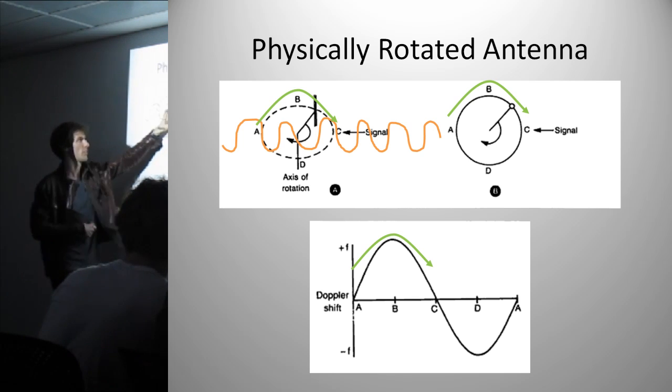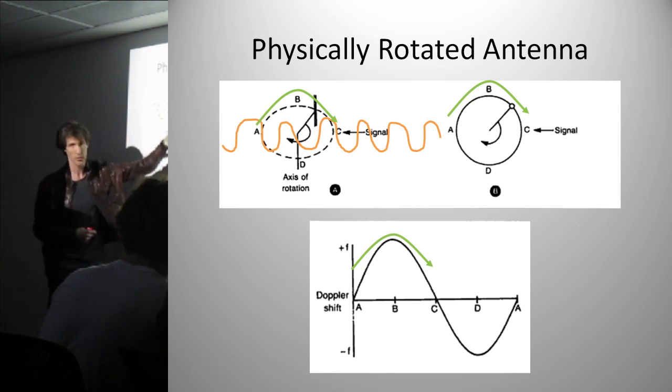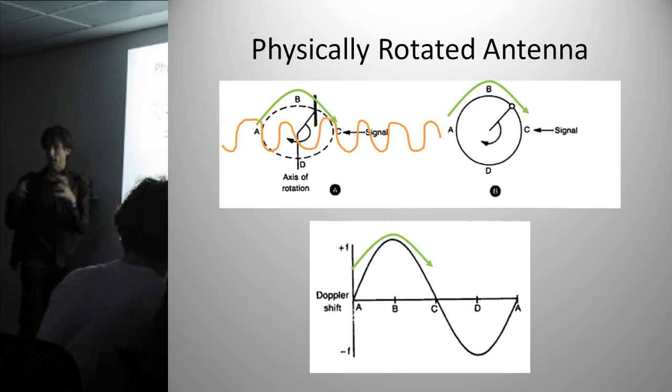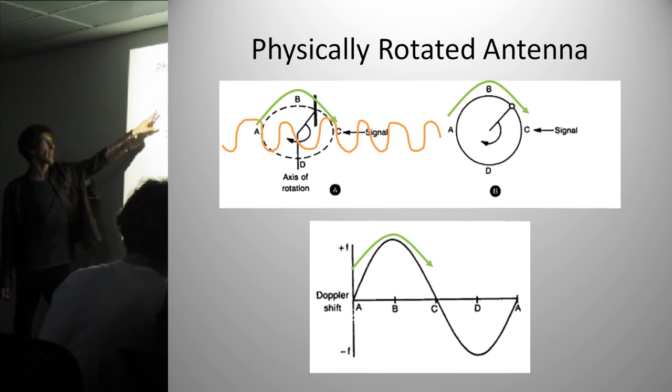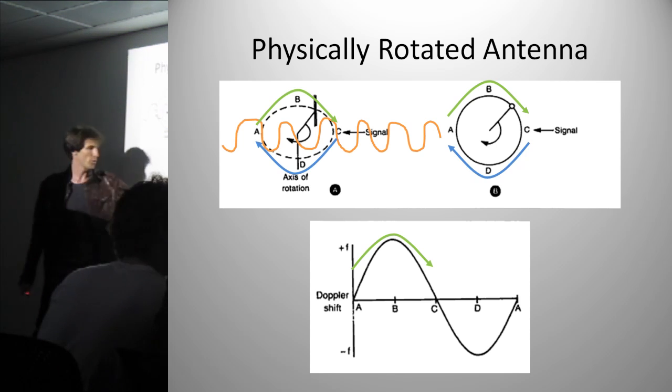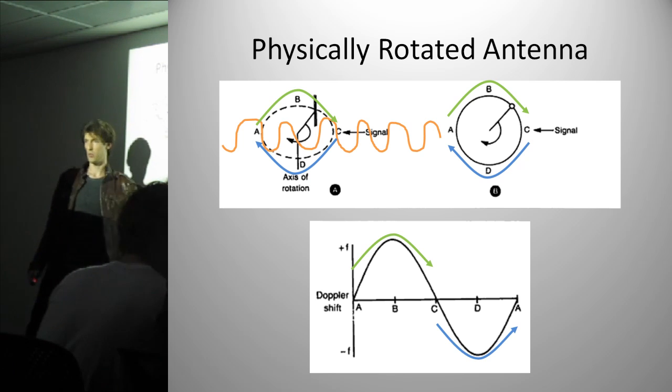And the signal is at the same velocity. So as you're moving through here, the antenna is quickly moving through this direction into the signal. And in that motion, you're going to get that compression of the wave, which is why you get this positive Doppler shift here. As it moves from C through D back to A, around the other side, you'll get a negative shift. And obviously this is turning into a sine wave.